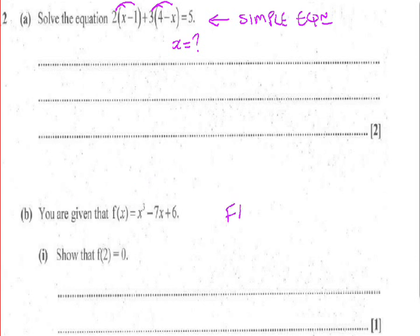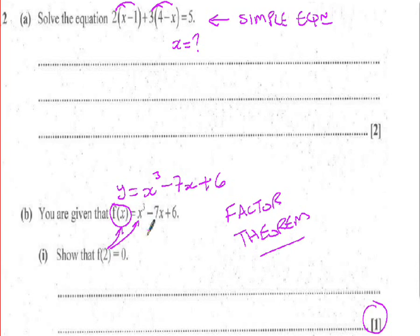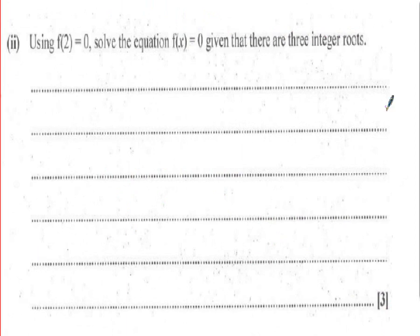Part b of question two is a factor theorem question. The function of x is really y = x³ − 7x + 6. The question says show that f(2) = 0 — all you do is substitute x = 2 into the equation: 2³ − 7×2 + 6 should give you zero. It's only one mark because it's just substituting into the equation, but you need to understand what the question is asking.